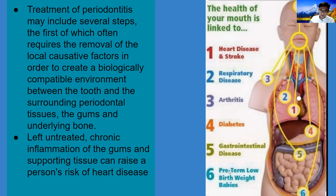Remember: preterm low birth weight baby. When you are pregnant, you may have an early premature low birth weight baby if you have bad gum disease. It means your baby cannot develop fully to term. You might have stomach problems, diabetes related to gum disease, and arthritis also related to periodontal disease. Respiratory problems, heart attack, and stroke are going to be related too.